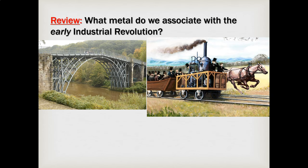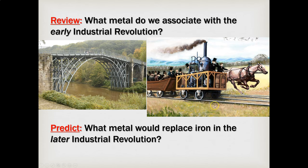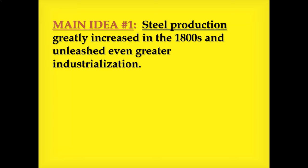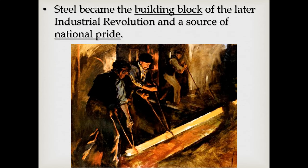We're going to begin by talking about metal. When you think of the early Industrial Revolution, you think of iron. The metal that is going to replace iron is steel. Steel production is going to be the key to building the modern world. The building block of the later Industrial Revolution is steel. Because steel is so important to building modern buildings and railroads and everything else, it becomes a source of national pride — a way for nations to compete and show their power as they produce more steel than others.